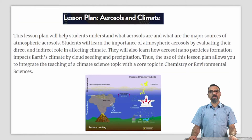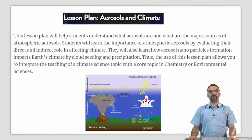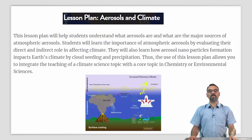A lesson plan titled Aerosols and Climate. This lesson plan will help students understand what aerosols are and what are the major sources of atmospheric aerosols. Students will learn the importance of atmospheric aerosols by evaluating their direct and indirect role in affecting climate. They will also learn how aerosol nanoparticle formations impact Earth's climate through cloud seeding and precipitation. Thus, the use of this lesson plan will allow you to integrate the teaching of a climate science topic with a topic in environmental sciences. So if you are teaching about aerosols as well as environmental pollution, we invite you to take a look at this particular lesson plan.